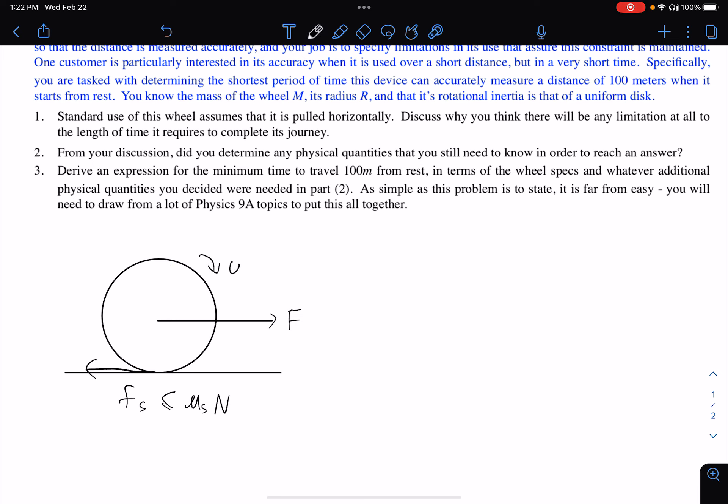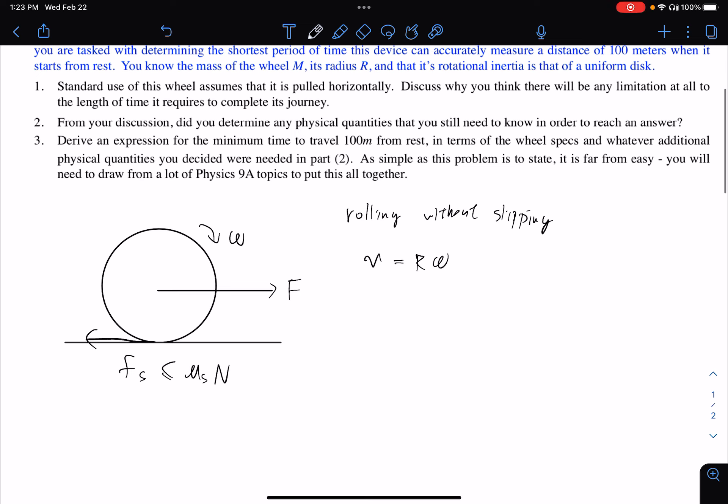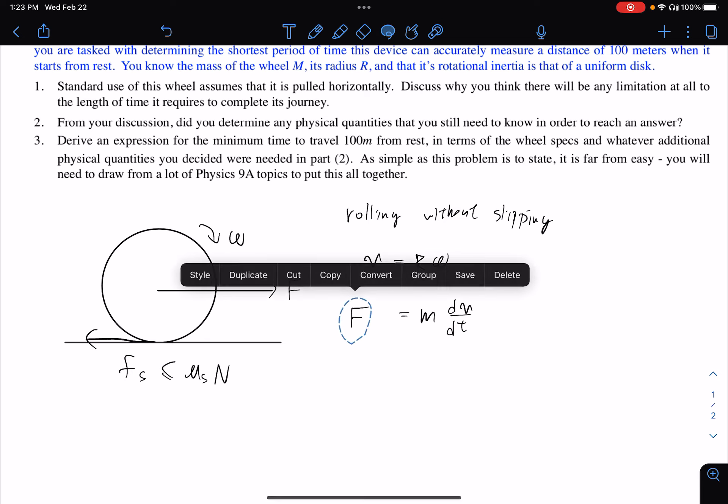This wheel for rolling without slipping, rolling without slipping, this criteria is that the speed of the wheel equals the radius of the wheel times its angular velocity. Now for the speed of the wheel it is governed by Newton's law.